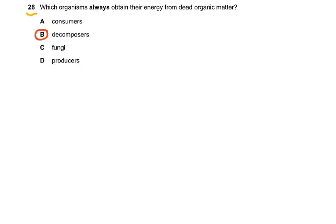Question 28: Which organisms always obtain their energy from dead organic matter? The only answer is decomposers. Consumers eat other animals or plants. Fungi are heterotrophs — some are saprophytes living on dead organic matter, but not all of them. Producers are autotrophs that make their own food, so they don't depend on dead organic matter.